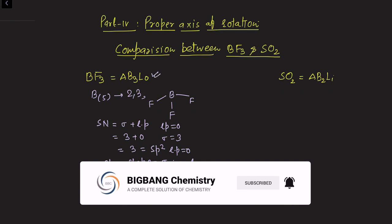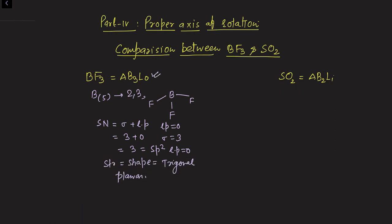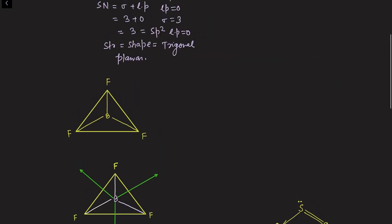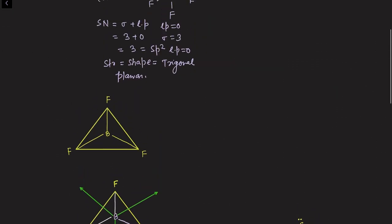This molecule is an AB3L0 type molecule. In previous videos we already discussed the presence of all C2 and C3 proper axes of rotation in AB3L0 type molecules, so the same number of proper axes of rotation will be present in the BF3 molecule. I'm taking the diagram from the previous video to illustrate this here.